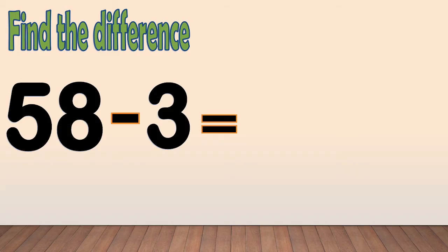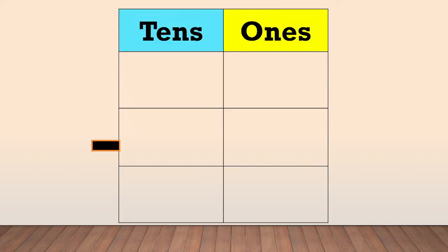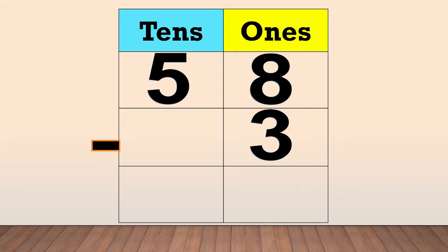Another example. Find the difference: 58 minus 3. First, arrange the numbers in columns. Place the digit of the number in a column based on its place value. 58 minus 3.